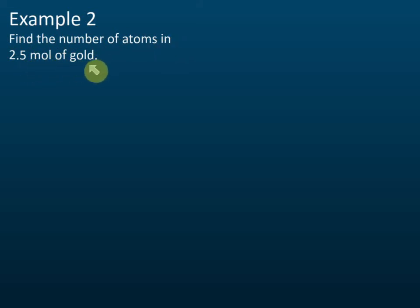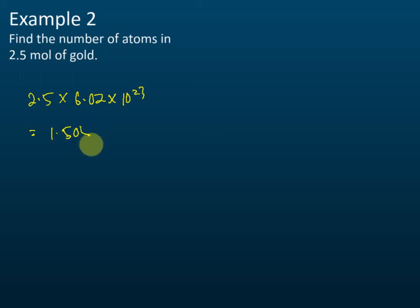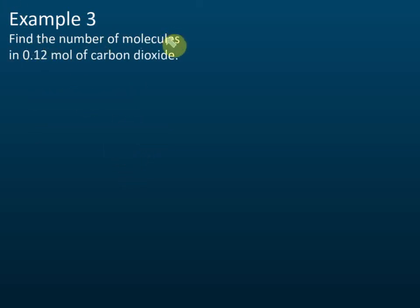Example 2: find the number of atoms in 2.5 moles of gold. It equals 2.5 × 6.02 × 10²³, which is equal to 1.505 × 10²⁴ atoms.